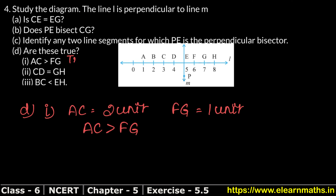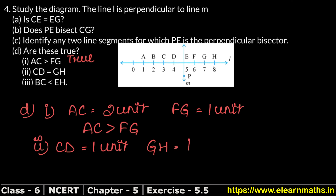FG is 1 unit, and it is clear that AC is greater than FG, so this statement is TRUE. Next: is CD equal to GH? CD is 1 unit and GH is also 1 unit. Both are 1 unit, so CD is equal to GH — this statement is also TRUE.